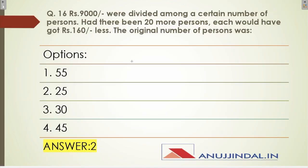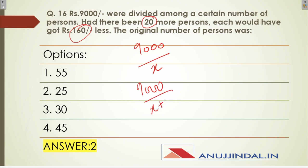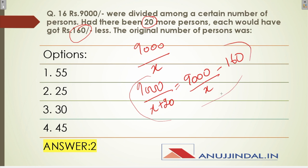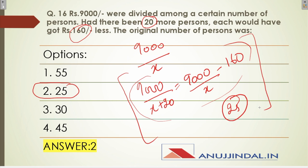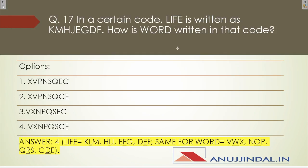Question sixteen is from the mathematical section. 9000 is being divided among X persons, so share = 9000/X. If there are 20 more people, each gets 160 less, so the equation is: 9000/(X+20) = 9000/X − 160. When you solve this equation, you get X = 25. So the correct answer is 25.